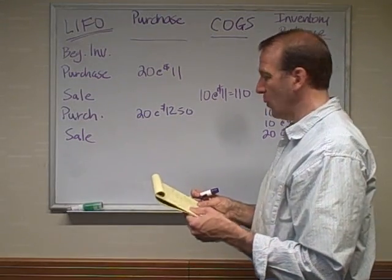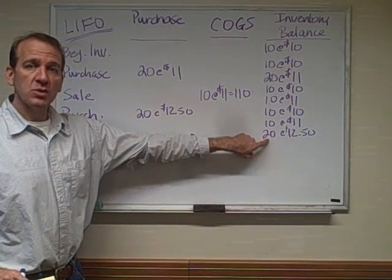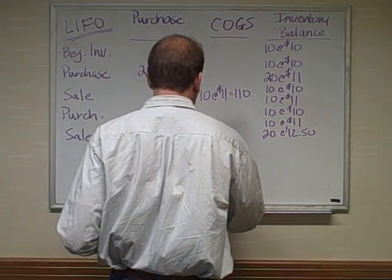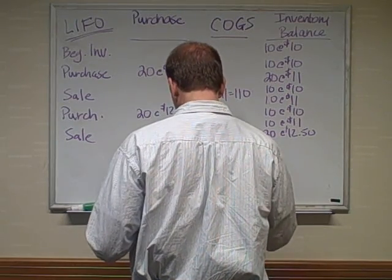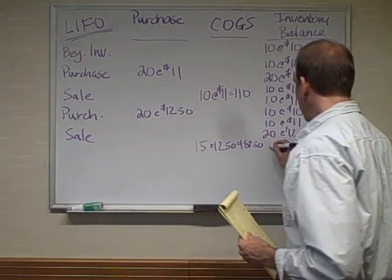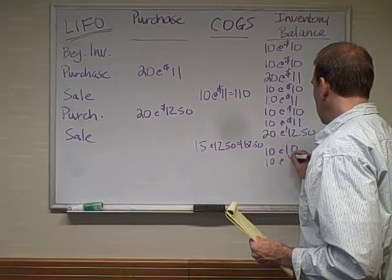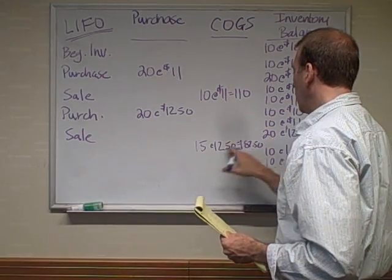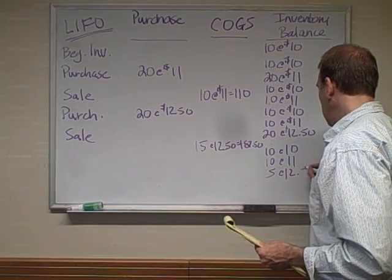Now we have our last sale, which is 15 units. Last in first out tells us these were the last ones in, so those are the first ones to go out when we have a sale. So we sold 15 at $12.50, which is $187.50. So what do we have left? We've got 10 at $10, 10 at $11, and from those 20 we purchased, we sold 15 of those, so we have 5 at $12.50.